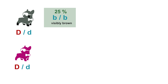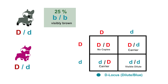Next we'll move on to the dilute gene. Since it's calculated in the identical way, I won't walk you through it — we'll end up with another table that looks the same for the dilute gene, meaning again we'll end up with a 25% chance of a visibly dilute or blue dog, a 50% chance of carriers, and a 25% chance of no copies at all.